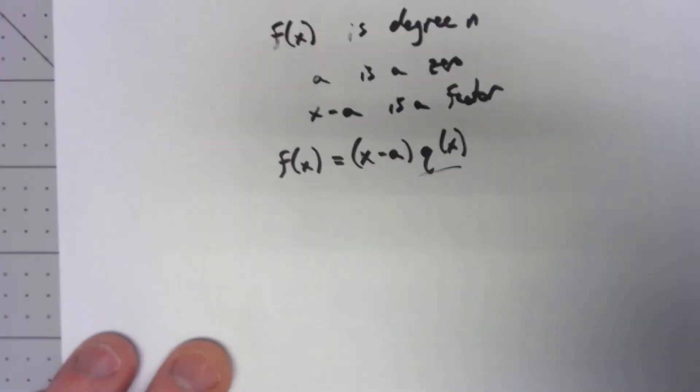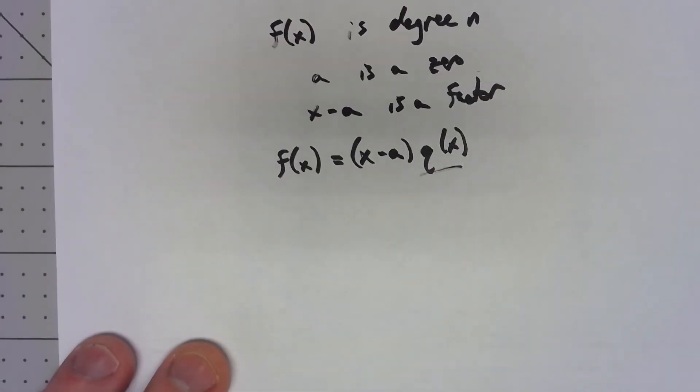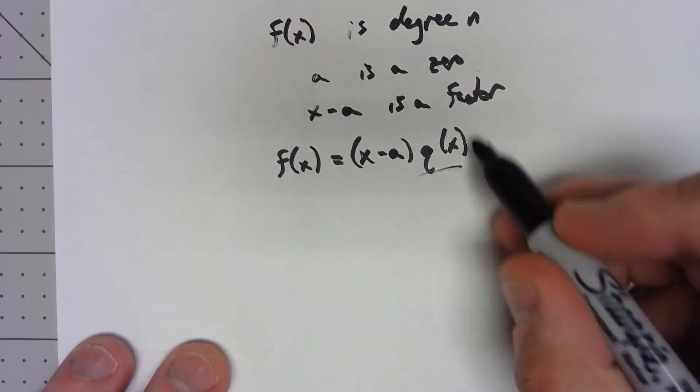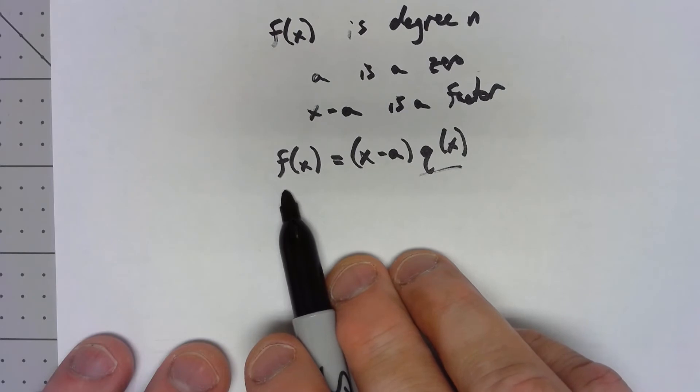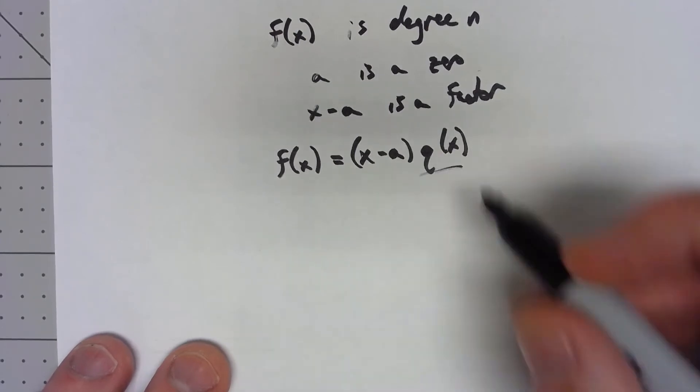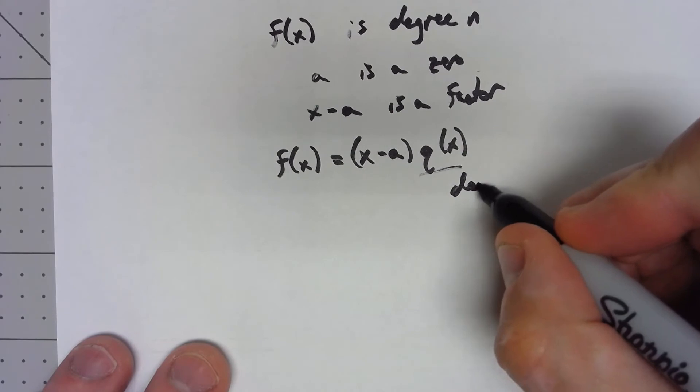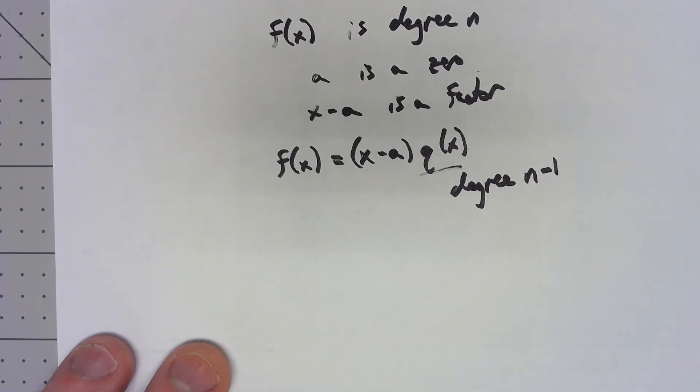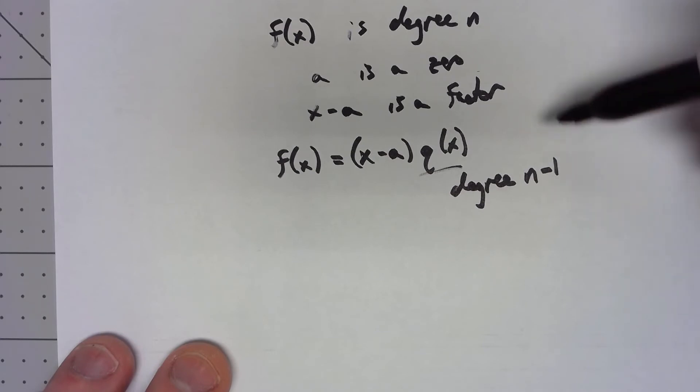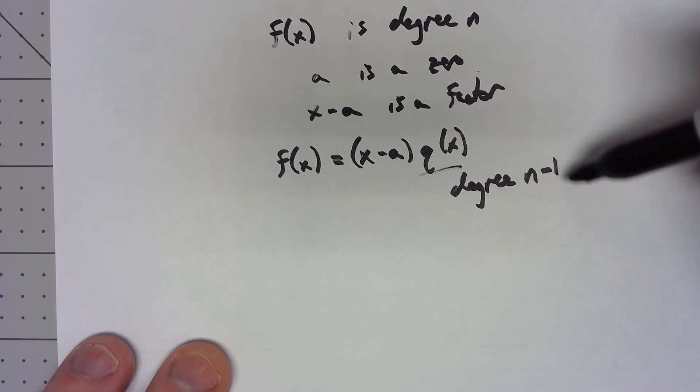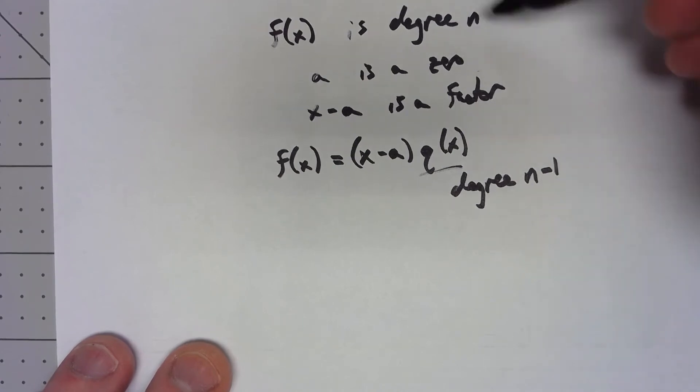Thinking about this q(x), what does the degree of that have to be? Well if f(x) is an n degree polynomial based on the way polynomial multiplication works, this thing has to have degree n minus one. Again this is the reason I'm not going to do it very formally, but basically what that means is we could do an inductive argument. If this has at most n minus one zeros we get another zero there, f(x) has n zeros.